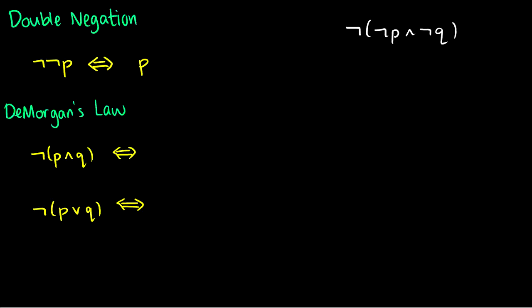The second law is De Morgan's law. We proved one of these using a truth table last time. NOT(p AND q) is the same as NOT p OR NOT q, and NOT(p OR q) is the same as NOT p AND NOT q. A good way to remember this: if you have NOT and then some stuff inside, distribute the negation to each statement and flip the connective — AND becomes OR, OR becomes AND.